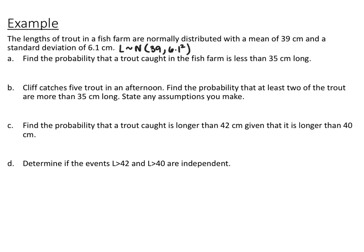Next example: the lengths of trout in a fish farm are normally distributed with a mean of 39 and a standard deviation of 6.1. Written as L ~ N(39, 6.1²). For part A, find the probability that a trout caught is less than 35 centimeters long. Drawing the picture, mean at 39, everything less than 35 shaded. Using the graphing calculator, the probability that L is less than 35 is 0.256.